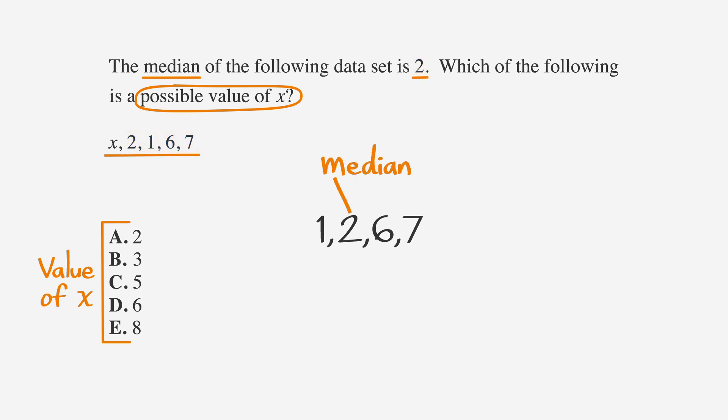Since the median always has the same number of terms to the left and right of it, we know that x has to be 2 or less. If we look at our answer choices, we see that A is the only number that is 2 or less. So, A is our answer.